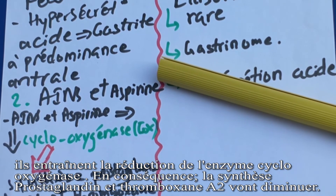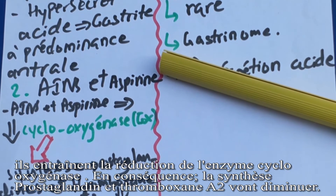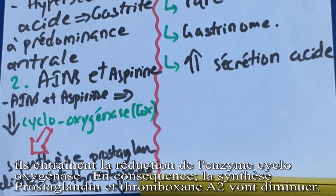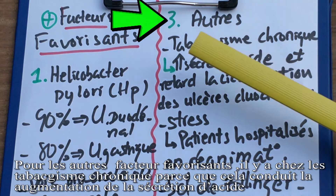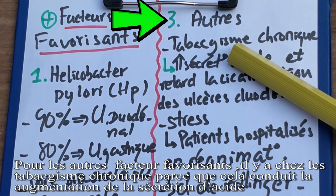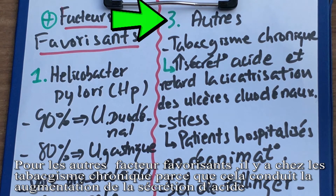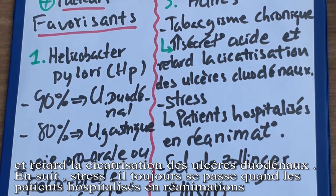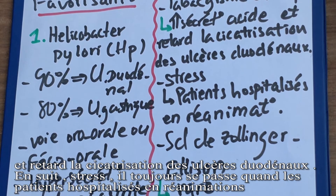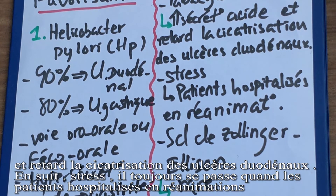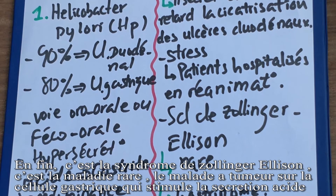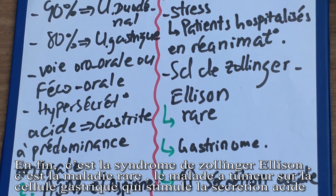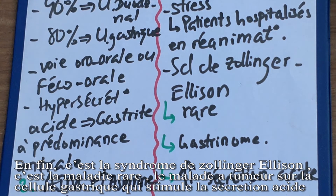It's called an enzyme cyclooxygenase, also called COX. You are also hospitalising a patient, and the patient can be carried out by the cancer, and the patient can be tested.